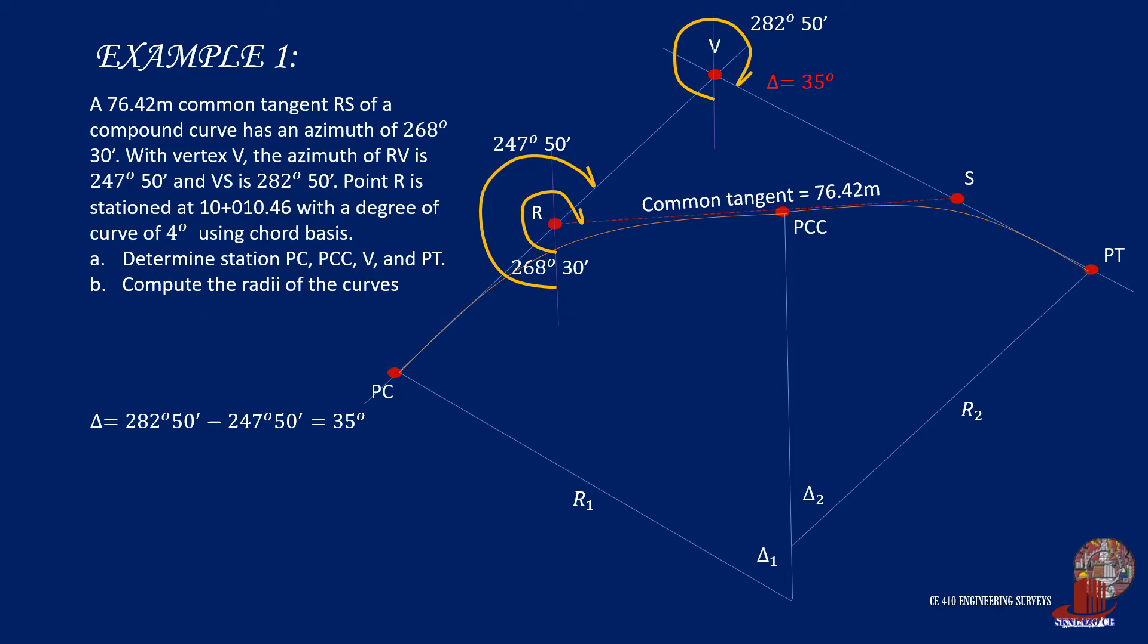Another given is the degree of the first curve at PC, which is 4 degrees. This time, it is through chord basis. So, we can identify the radius of the first curve by sine of D1 over 2 equals 10 over R1, where R1 is then computed as 286.56 meters.